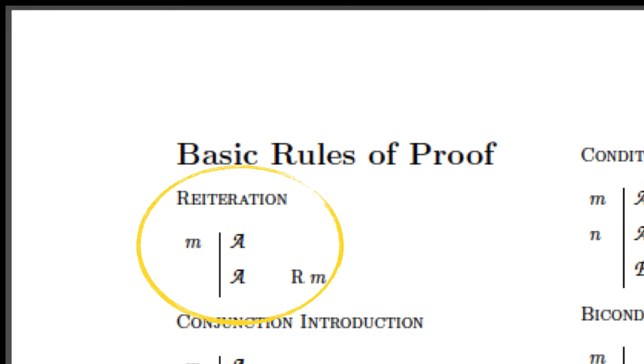Schematically, you have a sentence somewhere on a line of your proof. The reiteration rule lets you write down that sentence again on some later new line. The schematic rule has M rather than a line number because it can be any line. M is the number of whatever line your sentence is on.